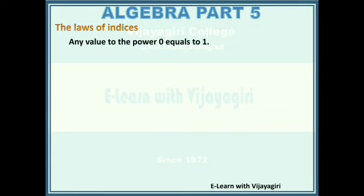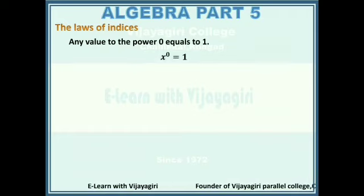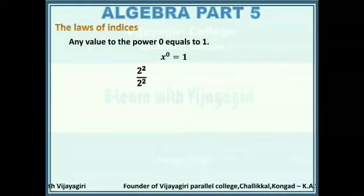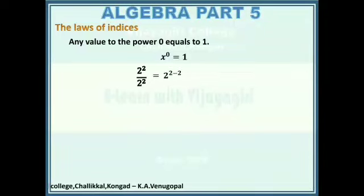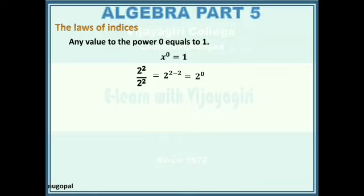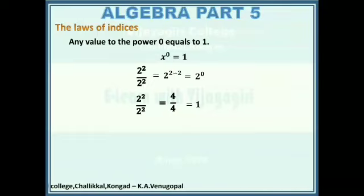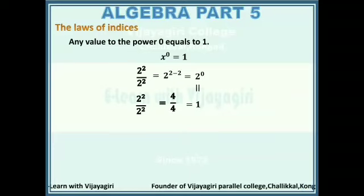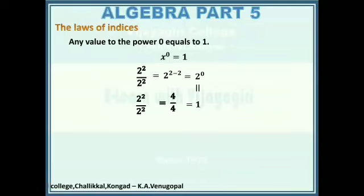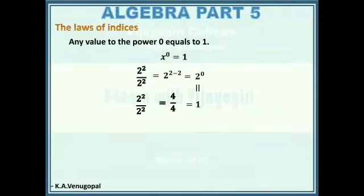Next law: any value to the power 0 equals 1 — x to the power 0 equals 1. Let's see how: 2 to the power 2 divided by 2 to the power 2, using the division law, gives 2 to the power 2 minus 2, which is 2 to the power 0. Another way: 2 to the power 2 is 4, and 4 by 4 equals 1. Since the question was the same, answers must match, so 2 to the power 0 must equal 1. Whatever number you use you get the same conclusion, so we can generalize: x to the power 0 equals 1.